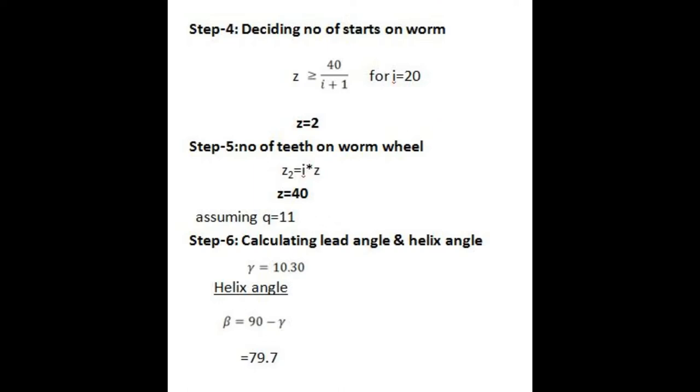Step 4: Deciding number of starts on worm. Z is greater than equal to 40 divided by i plus 1, where i equals 20. Therefore Z equals 2. Step 5: Number of teeth on worm wheel. Z2 equals i times Z, therefore Z2 equals 40. Assuming Q equals 11.